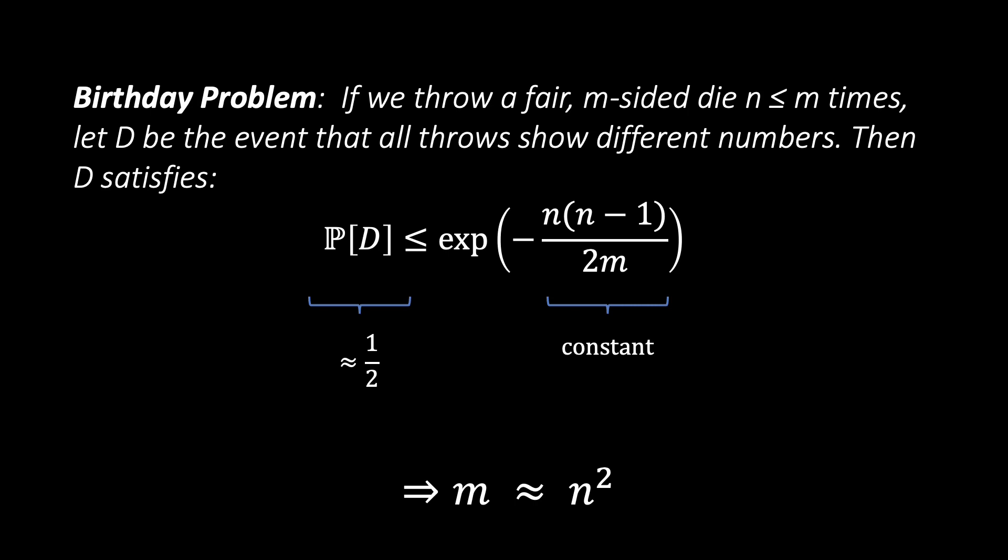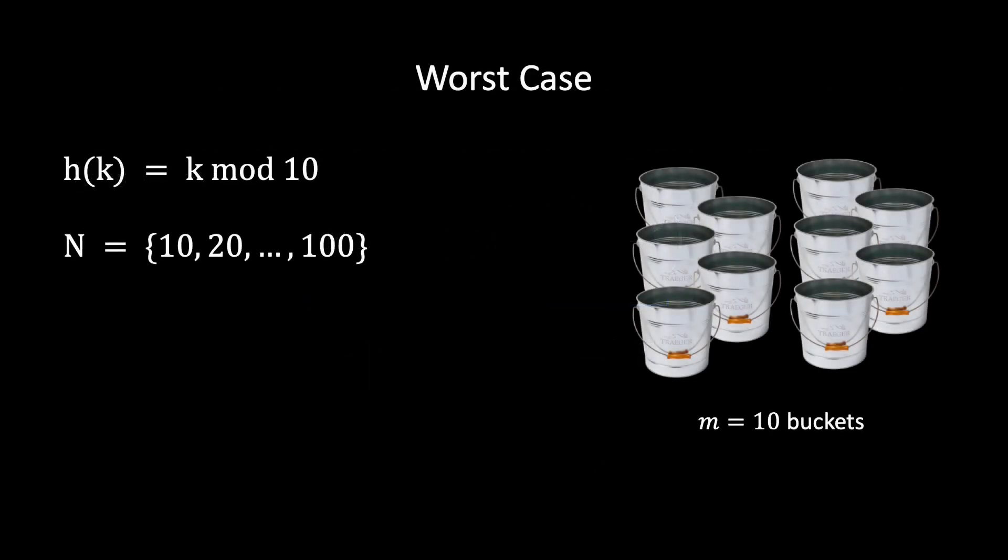For this result we assume to have a random hash function. In reality, with a simple hash function, we might be even more unlucky. If we use for example K modulo 10 to hash the following keyset, we get nothing but collisions. Even though this example is quite artificial, it shows that for any keyset it is possible to find a very bad hash function.